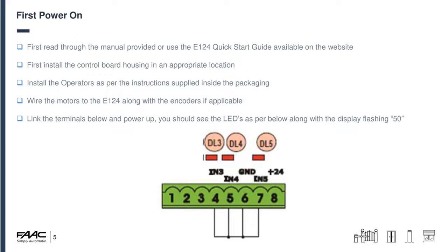It's very important: if you are extending any motor cables or encoder cables, remember you need to use 2.5mm core for the motors for the first 10 metres, and up to 20 metres use 4mm core. Use 0.5mm core shielded cable for the encoders. Please don't use alarm cable or Cat5 cable — it will probably work at first but it's known to give misreads due to the way the bus system works, where power and data share the same two lines. Next, link the terminals as shown in the diagram, and when you power up the board the first thing you'll see is it flashing '50'.